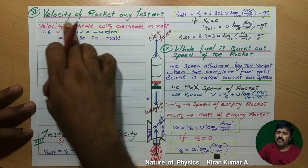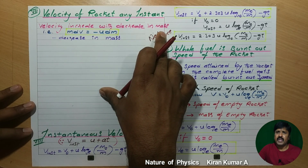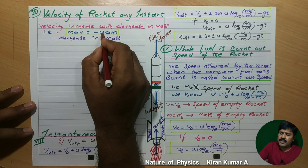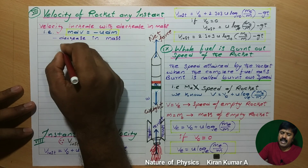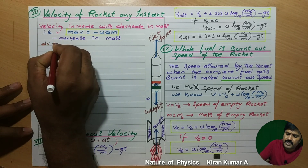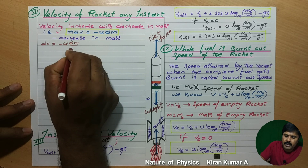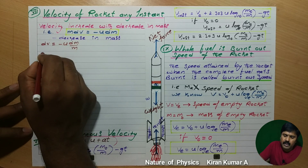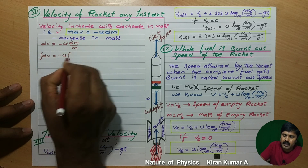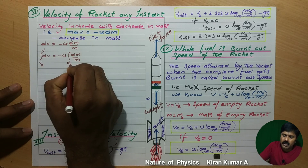This is the seventh point: velocity of the rocket at any instant. Velocity increases as mass decreases. After some time, as fuel decreases, the velocity of the rocket increases according to the law of conservation of linear momentum. From the previous equation: m·dv = −u·dm, where the negative sign represents decreasing mass. So dv = −u·dm/m. Taking integration on both sides: ∫dv = −u·∫dm/m, with limits v₀ to v on the left and m₀ to m on the right.